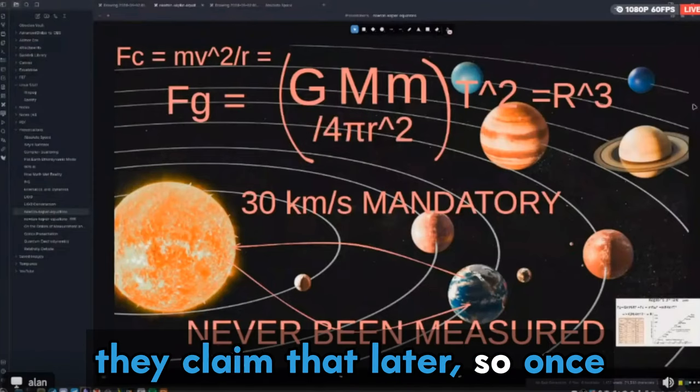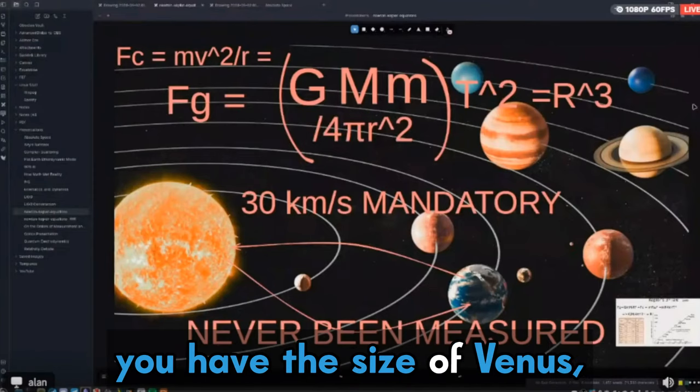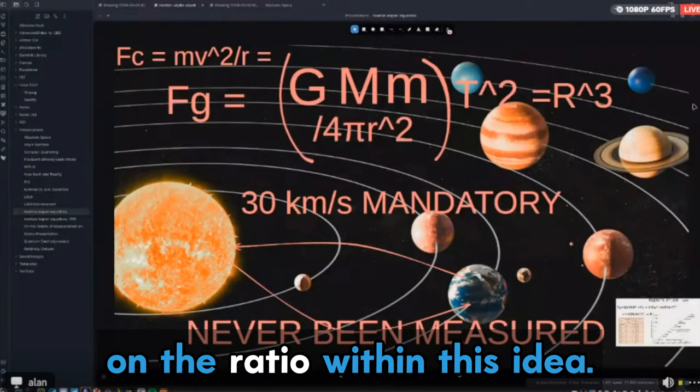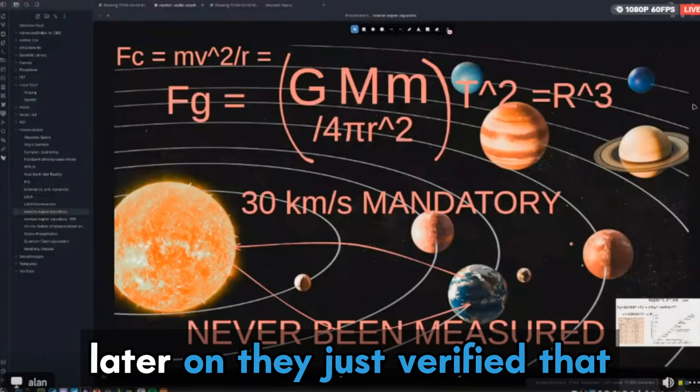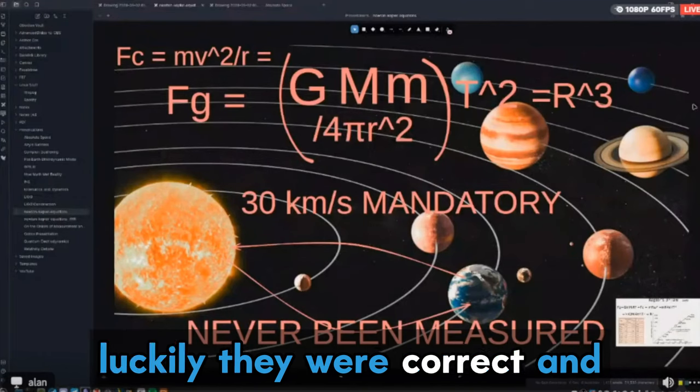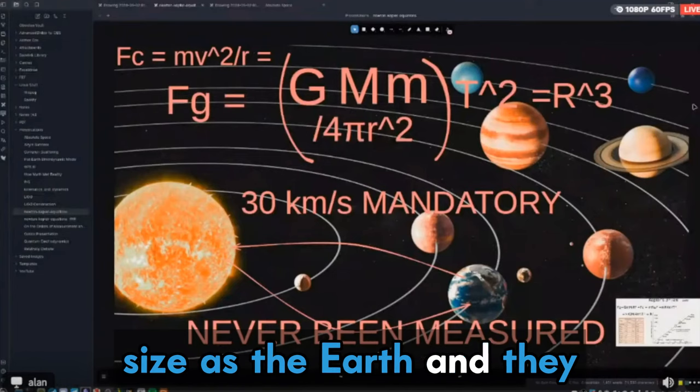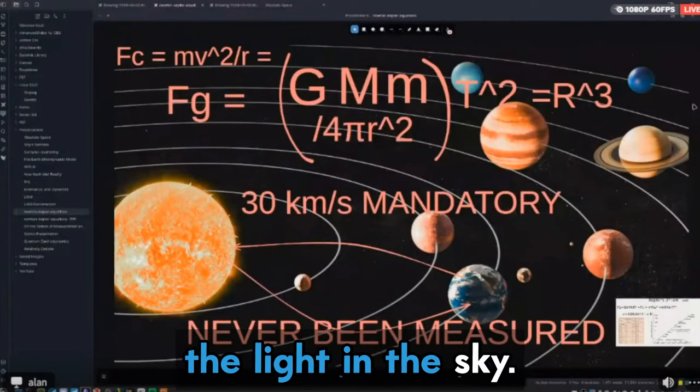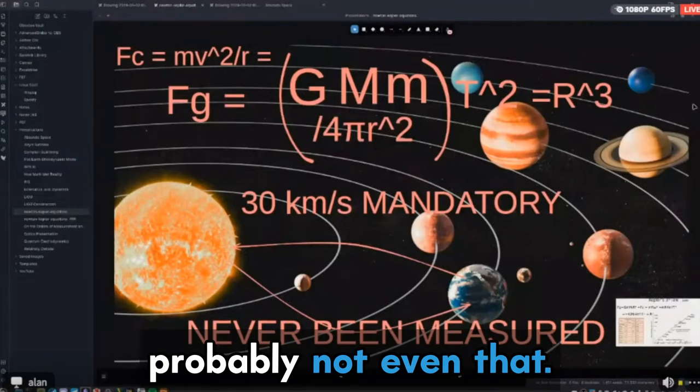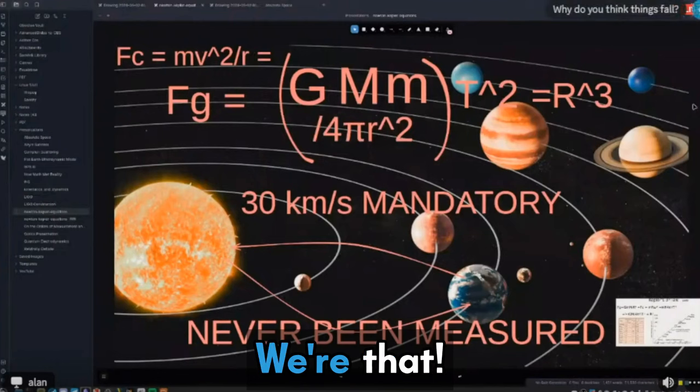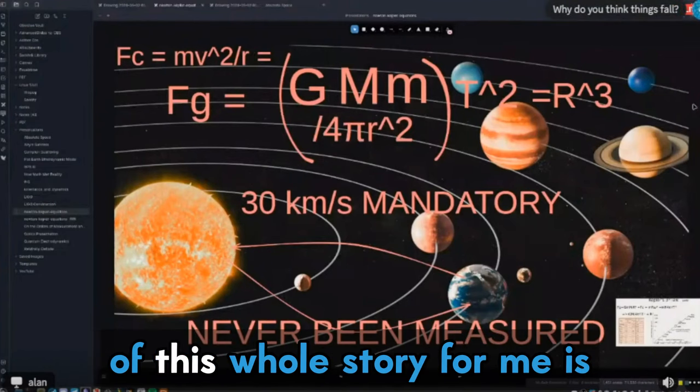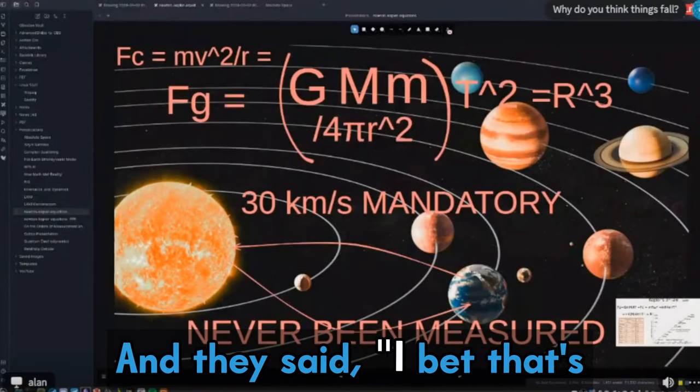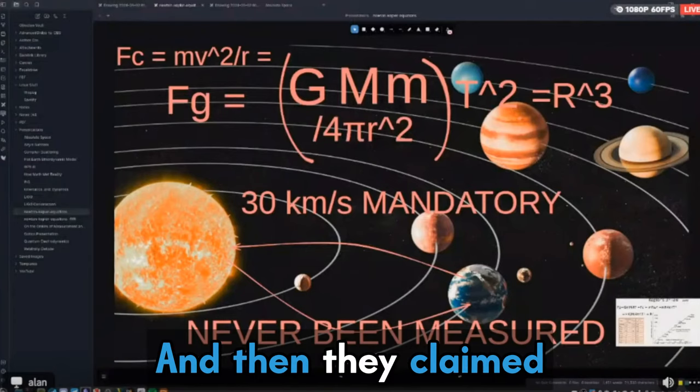And then they claim that later. So once you have the size of Venus, you can extrapolate the size of all the other bodies based on the ratio within this idea. And then they claim that later on, they just verified that luckily they were correct. And Venus is basically the same size as the Earth. And they were right about everything. Sometimes you just get lucky by looking up at the light in the sky. That's the size of maybe a dime or probably not even that. And then just going, you know what? Where's that? How insane is it? That's one of the craziest parts of this whole story for me is that they looked up at the light in the sky called Venus. And they said, I bet that's the same size as the Earth. And then they claim they just got it right.